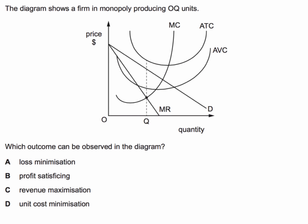The diagram shows a firm in monopoly producing OQ units. Output is OQ. Monopoly, of course, faces a downward sloping demand curve — the average revenue curve — with a marginal revenue curve twice the gradient, as shown. Which outcome can be observed in the diagram? Press that pause button, take a few seconds to think about the answer, and when you're ready, I'll come back with the correct answer.